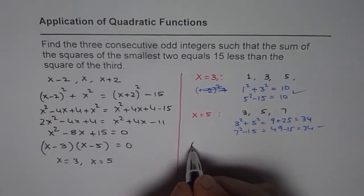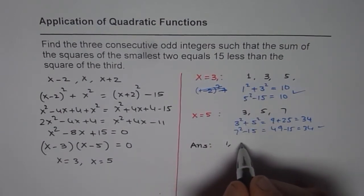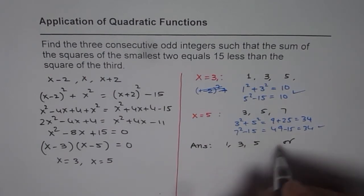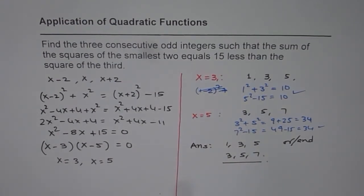So that is kind of a check. We can easily write down our answer now. We have two sets. The numbers could be 1, 3, and 5, and 3, 5, and 7. So these are the solutions for the given question. I hope that helps. Thank you.